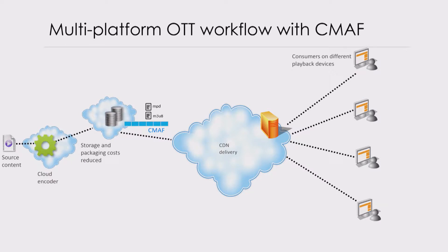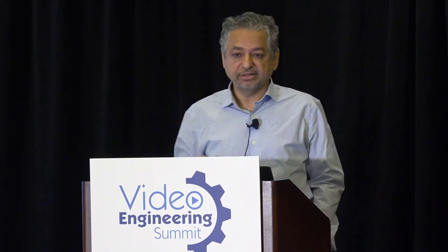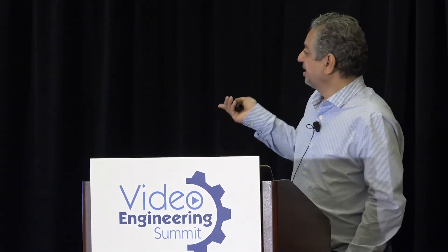If we can achieve that, then storage and packaging cost will be reduced. One single copy is going to exist in the CDNs, so more efficient caching, definitely reducing the cost of the deployment. And of course, one single copy of the content with two manifest files for different devices. If the device supports one of the manifest files, it can download one — it doesn't need to download both. Manifests are usually very light compared to the media segments.